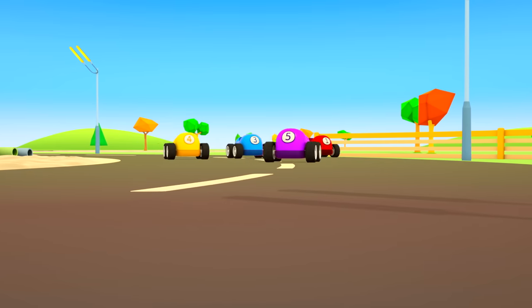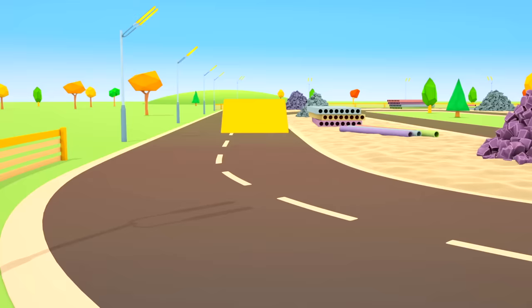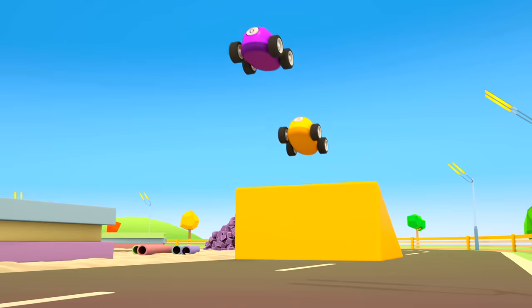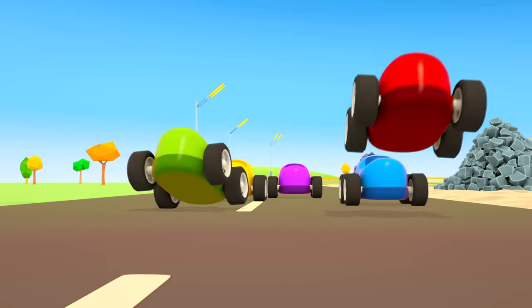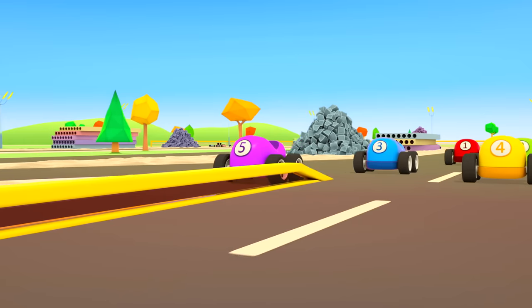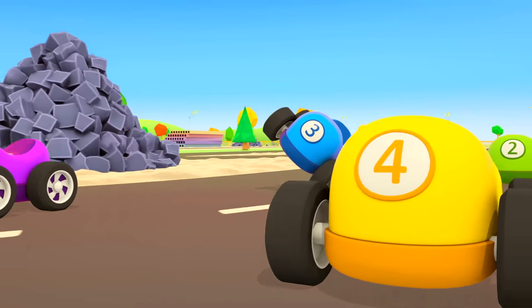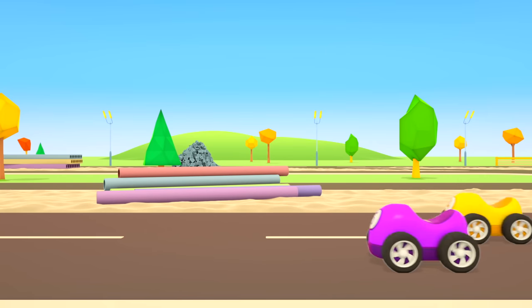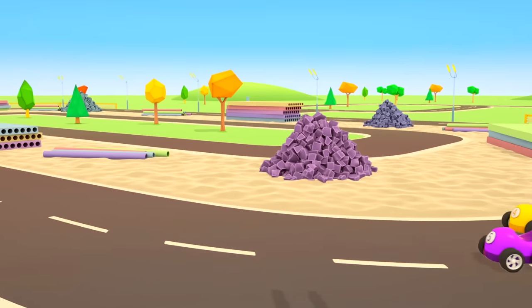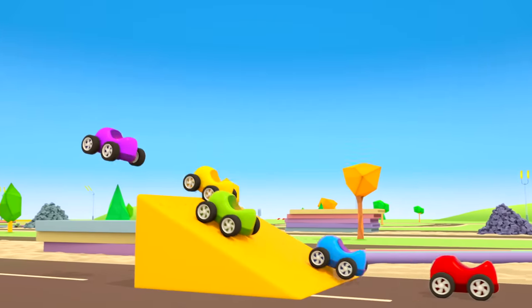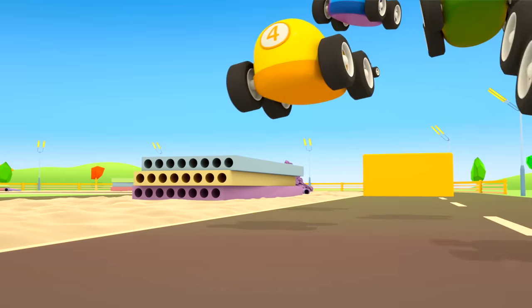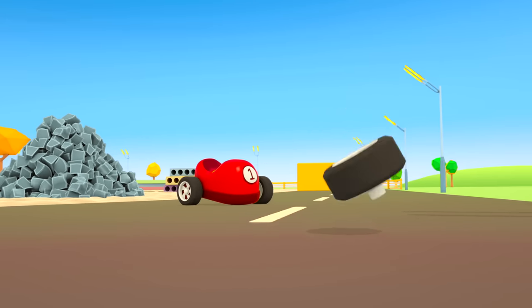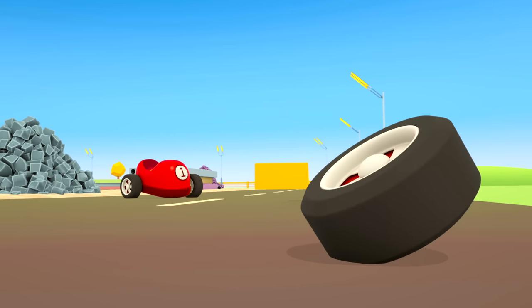The cars swing around the turn, go up the yellow ramp, they jump! More obstacles! Another ramp. Uh-oh! The red car has lost a wheel.